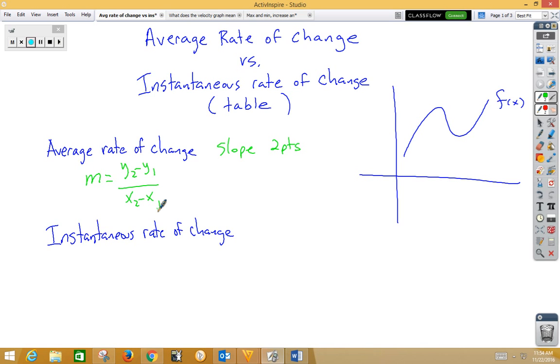Instantaneous rate of change is slope at one point, so that would be the slope of the tangent line versus the slope at the secant line. Instantaneous rate of change would be derivative followed by plugging in your x value.